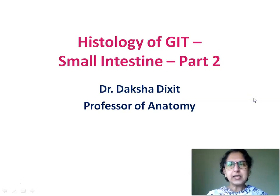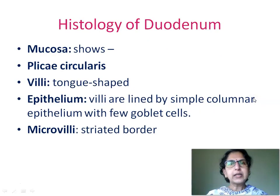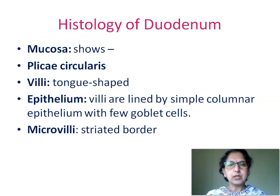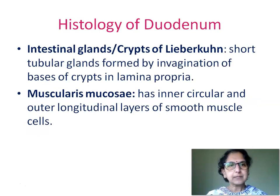Let us first see a quick review on histology of duodenum. Mucosa in duodenum showed plicae circulares. It showed numerous tongue-shaped villi. The villi were lined by simple columnar epithelium with few goblet cells. Microvilli were also seen, giving rise to the striated border-like appearance.